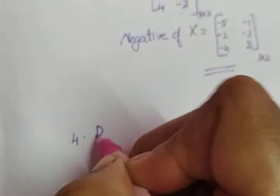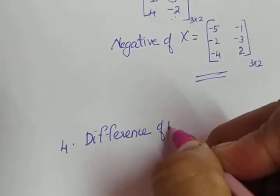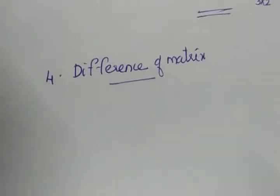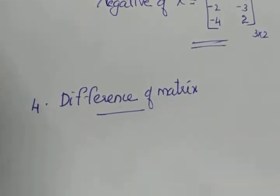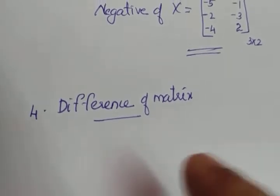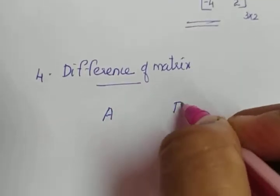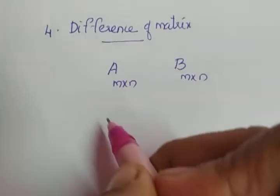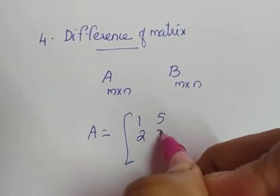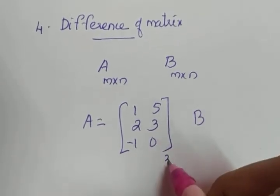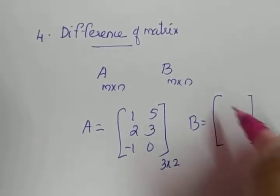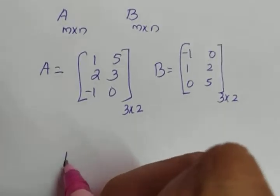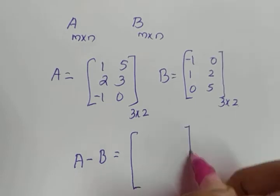The fourth operation is the difference of matrices, which is subtraction. The same condition applies as for addition: we can find the difference of matrices A and B only if their orders are the same. Suppose A equals [1, 5; 2, 3; −1, 0] — a 3 by 2 matrix — and B equals [−1, 0; 1, 2; 0, 5], also 3 by 2. We can already say A minus B will be of order 3 by 2.